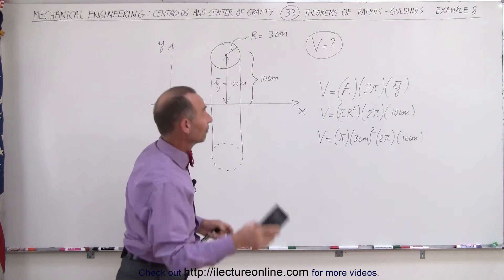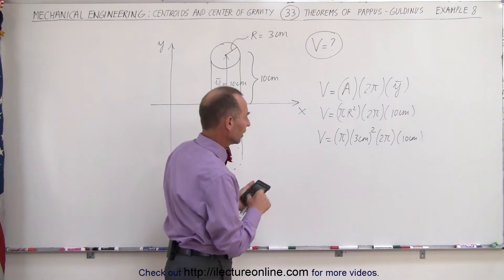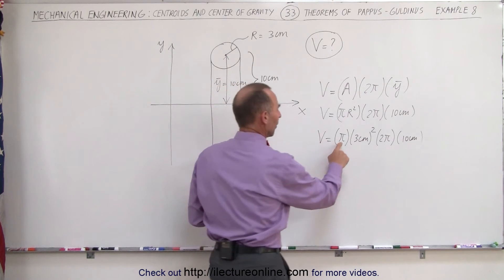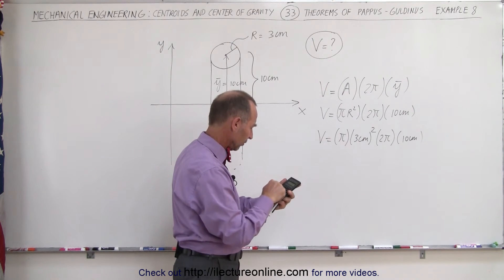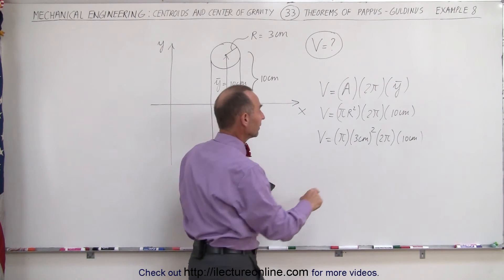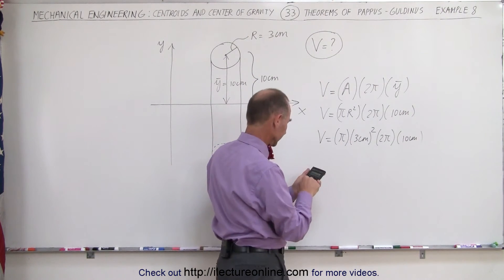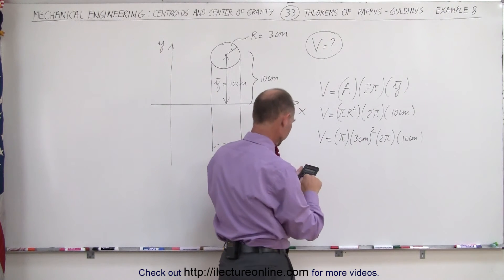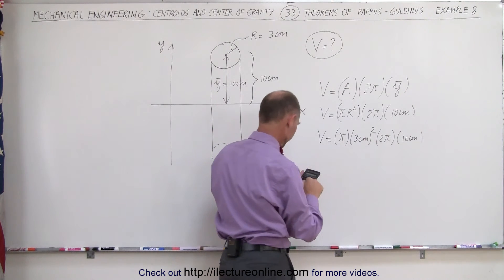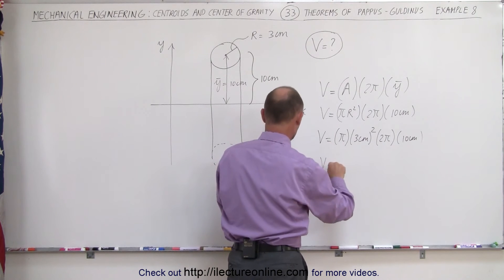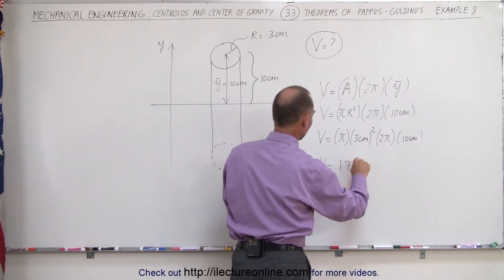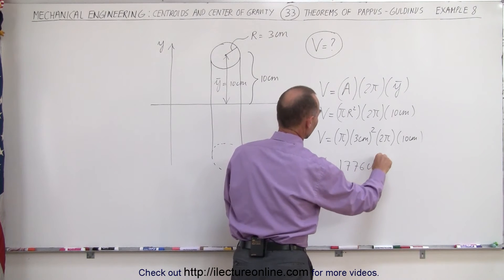With a calculator we can figure out what this is equal to. We have π times π, that's π squared times 9 times 2 and times 10. And so we have a total volume of 1,776 cubic centimeters.